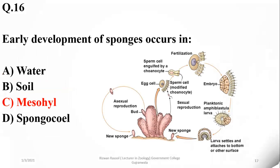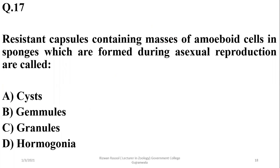Resistant capsules containing masses of amoeboid cells in sponges, which are found during asexual reproduction, are called gemmules.